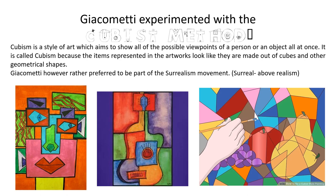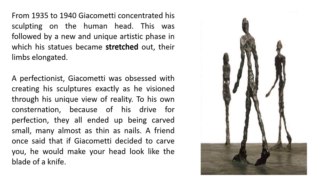He was very interested in the cubist method as well. From 1935 to 1940, Giacometti concentrated his sculpting on the human head. This was followed by a new and unique artistic phase in which his statues became stretched out, their limbs elongated. A perfectionist, Giacometti was obsessed with creating his sculptures exactly as he visioned through his unique view of reality. Because of his drive for perfectionism, they all ended up being carved small — many almost as thin as nails. A friend once said that if Giacometti decided to carve you, he would make your head look like the blade of a knife. Very thin!